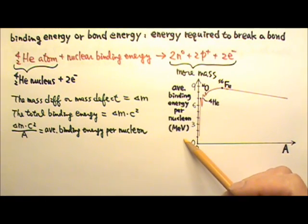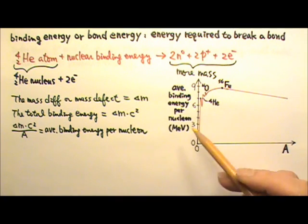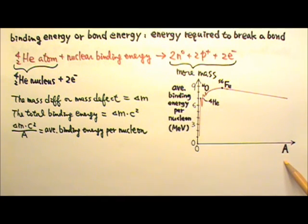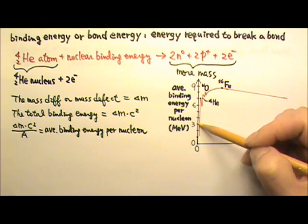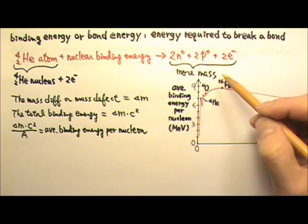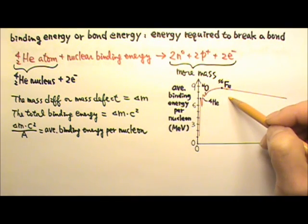Let's look at the average binding energy per nucleon versus the number of nucleons graph again. Those very small nuclei are not as stable as those with size similar to that of iron-56.